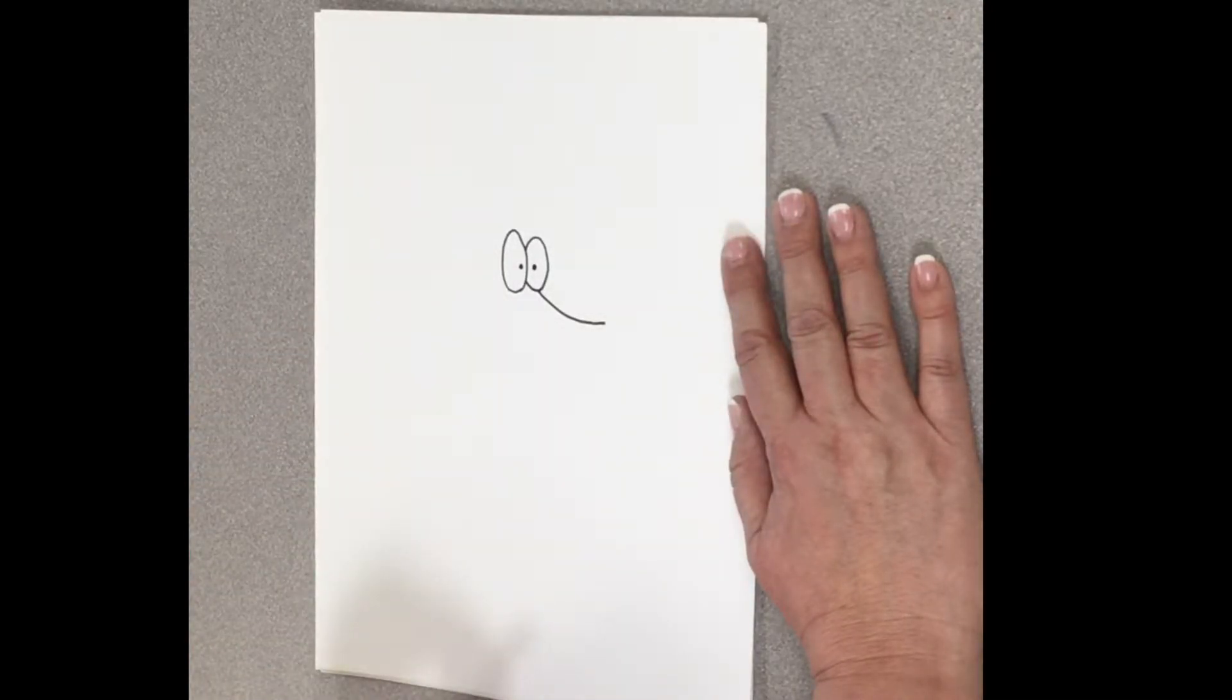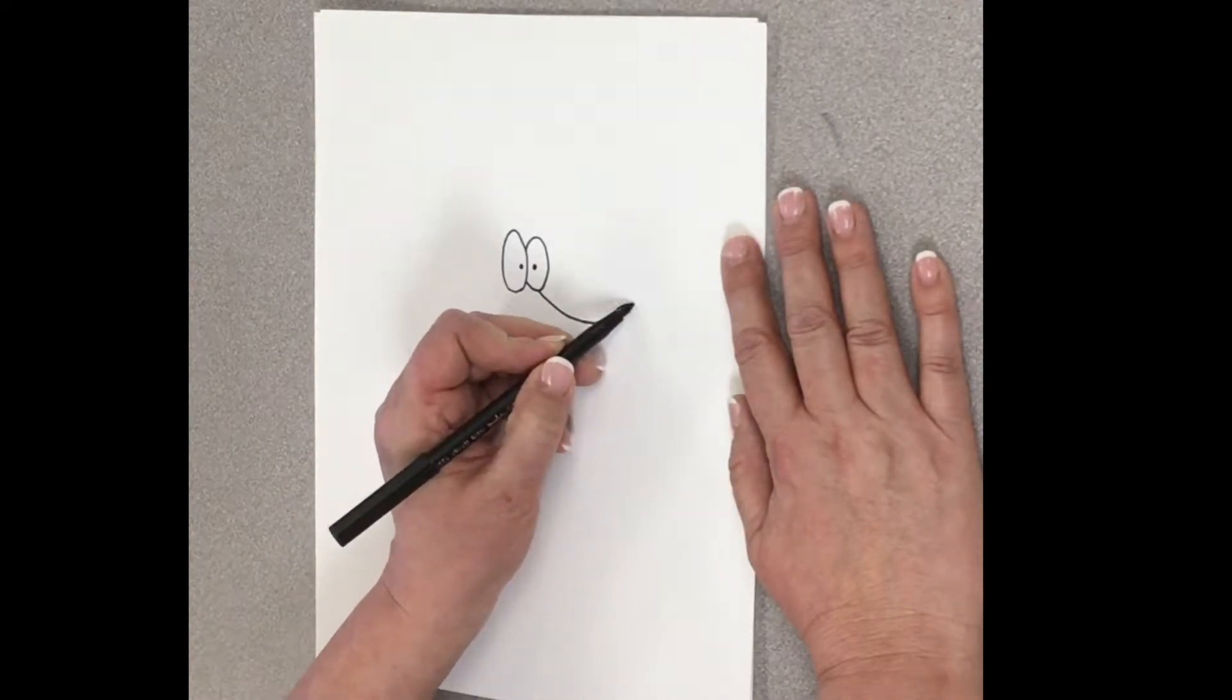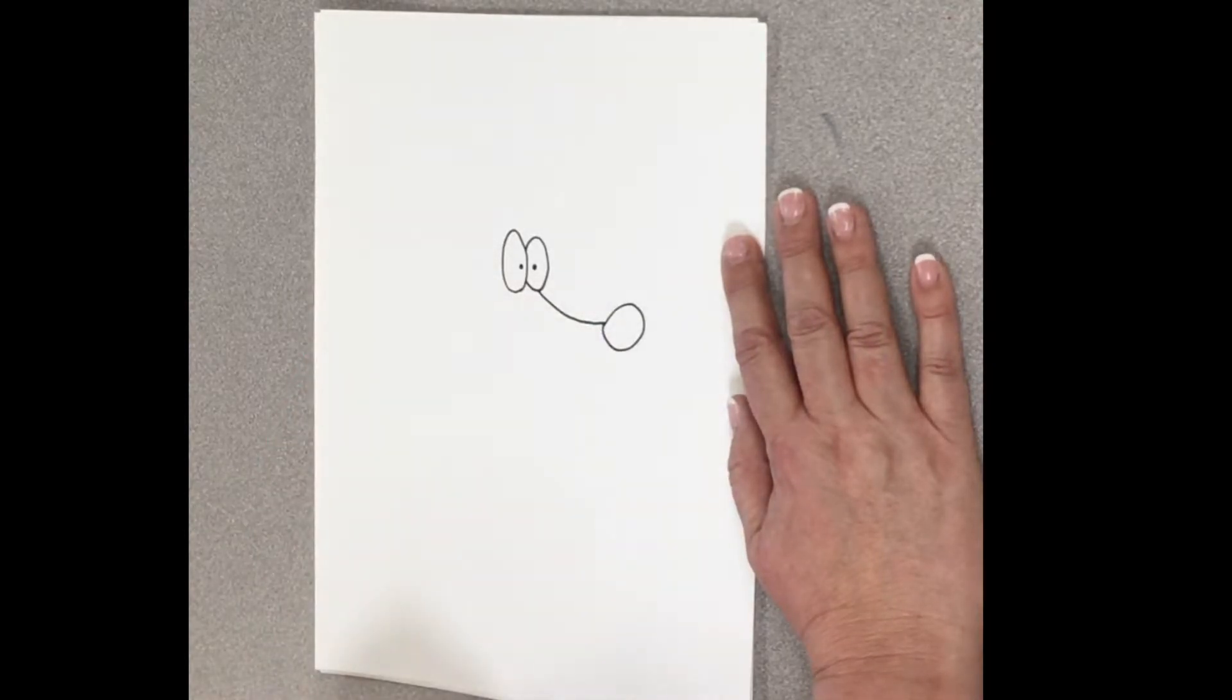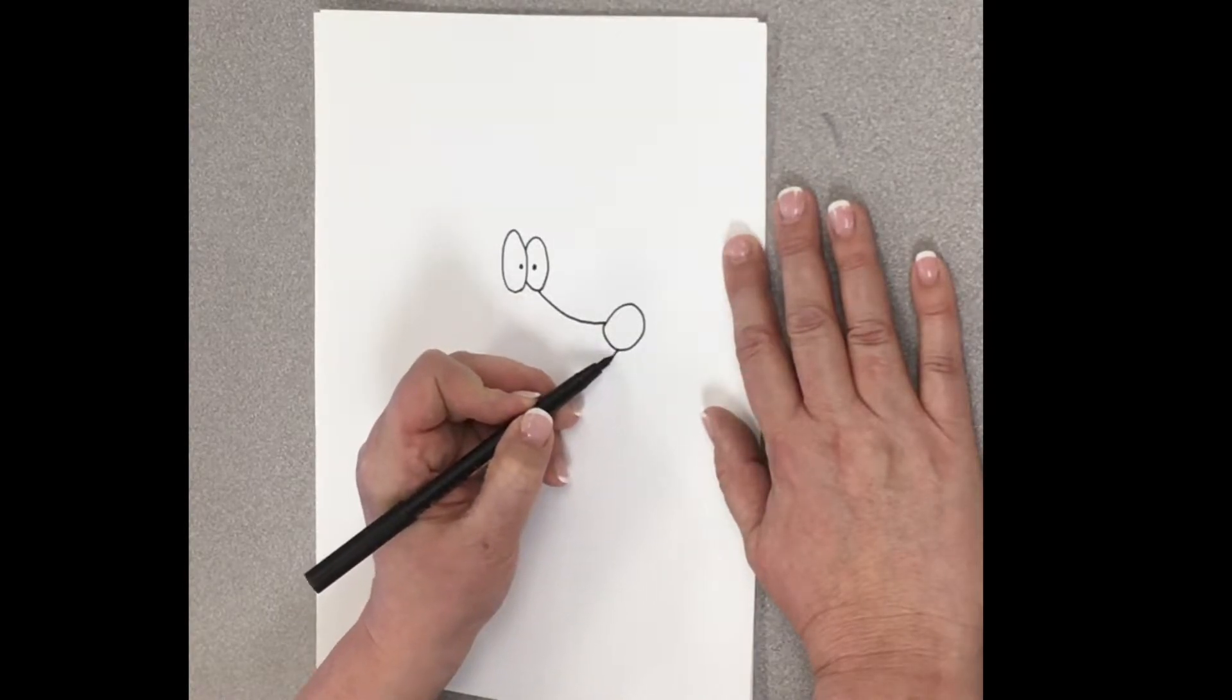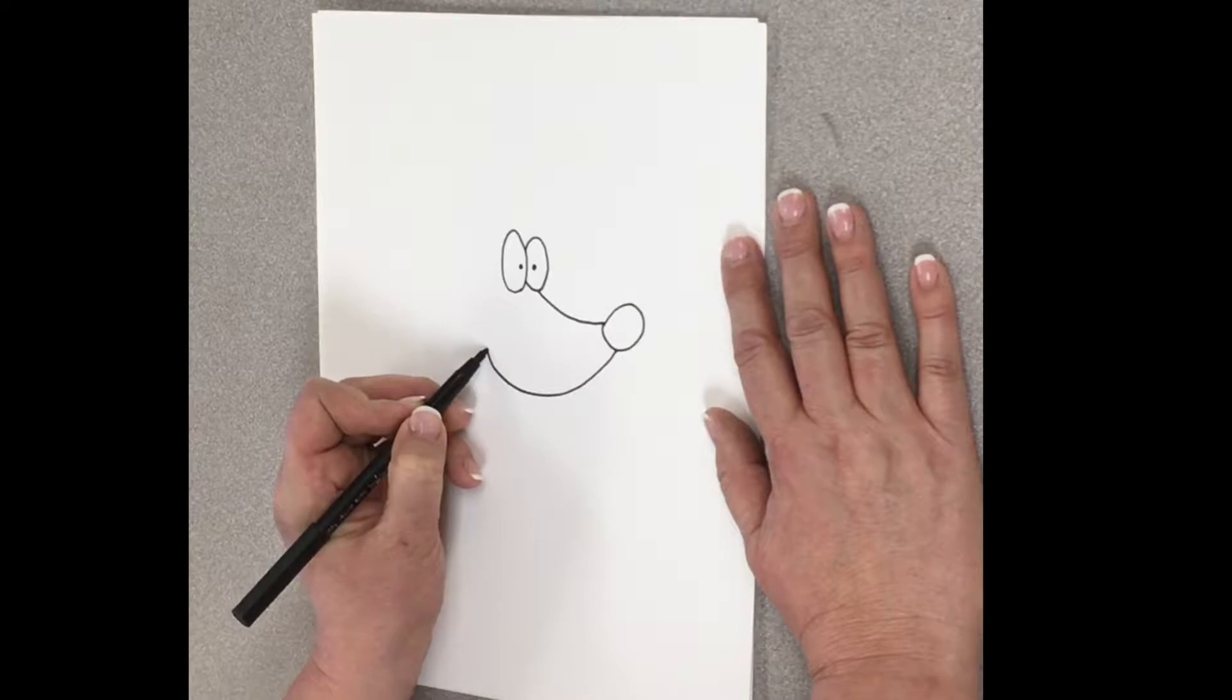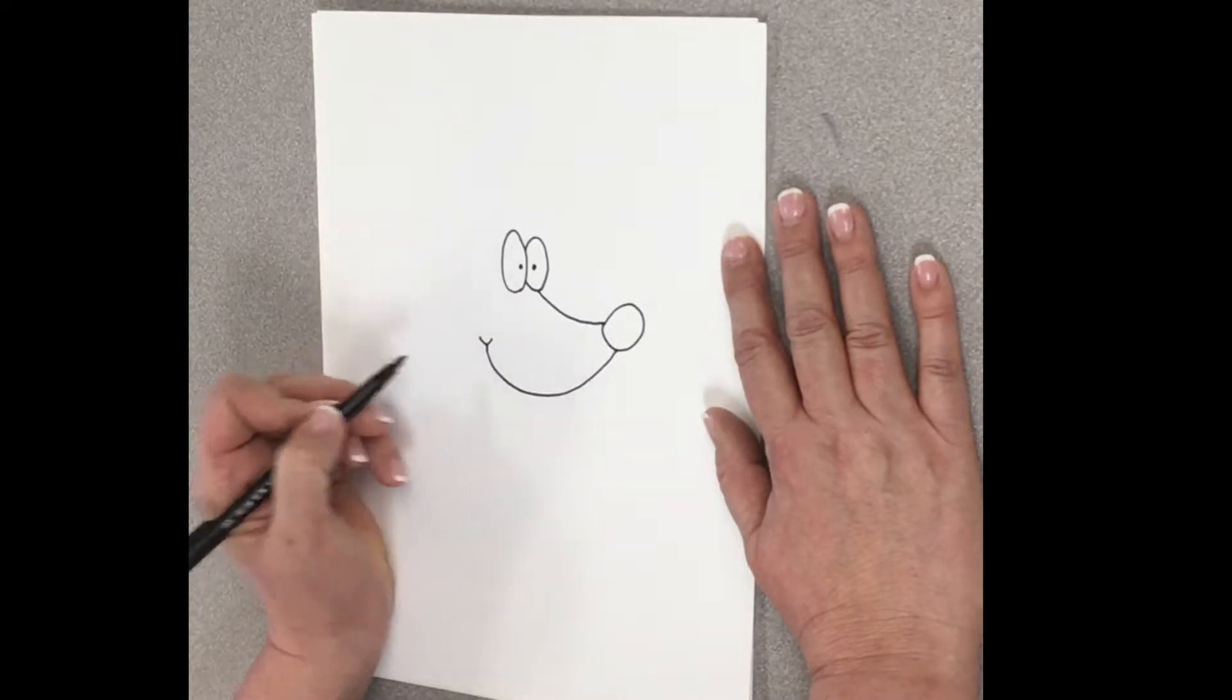All right, now, I'm going to draw kind of like a circle right here. And then from that circle, I'm going to draw kind of like a smiley face, like that.